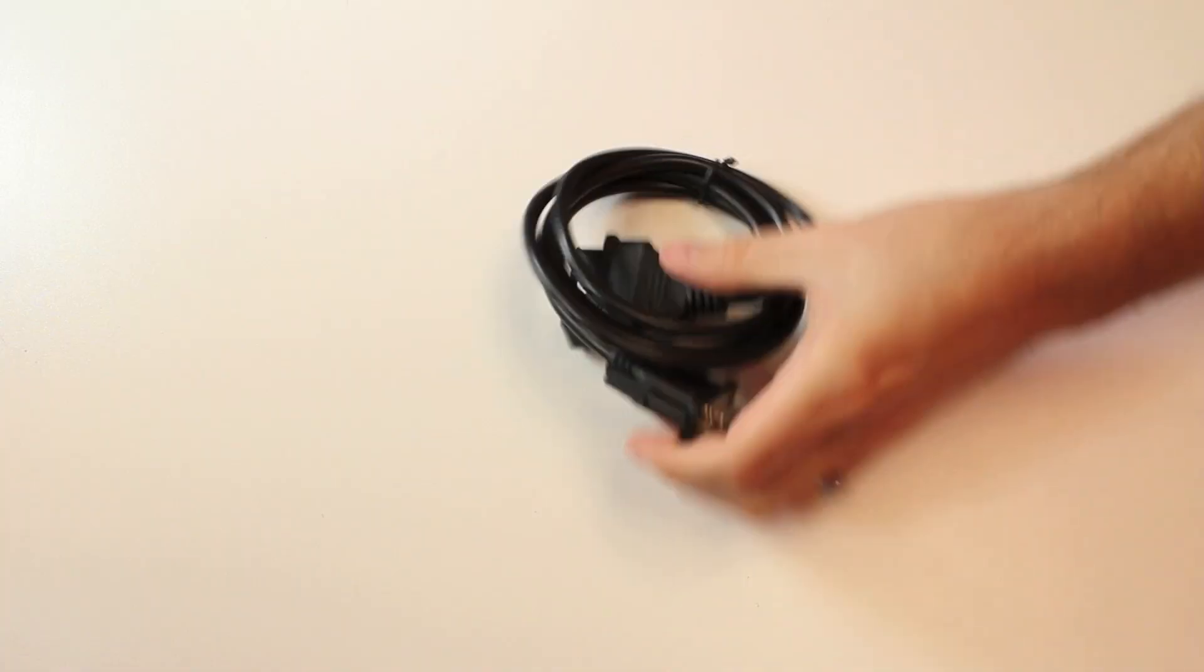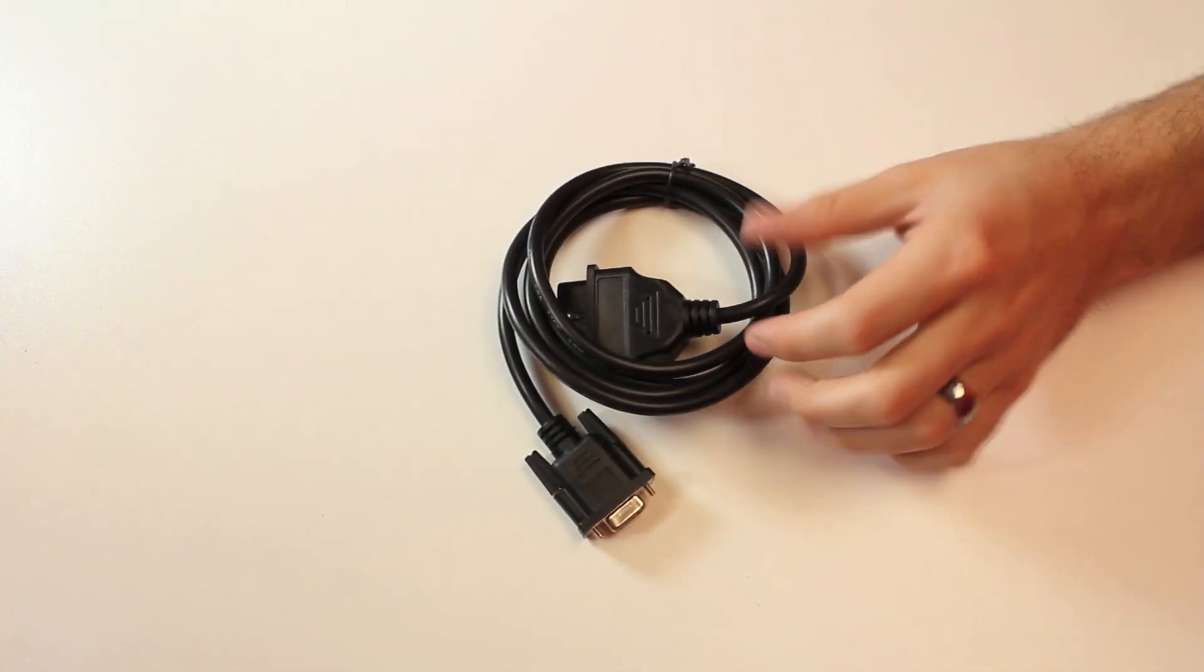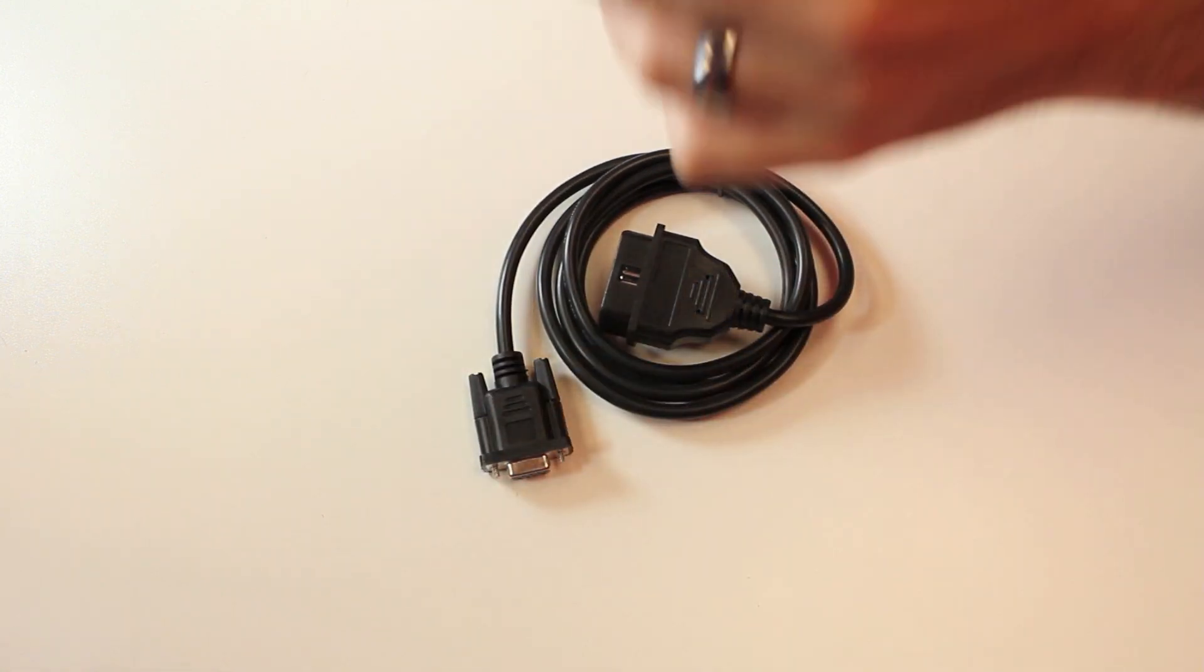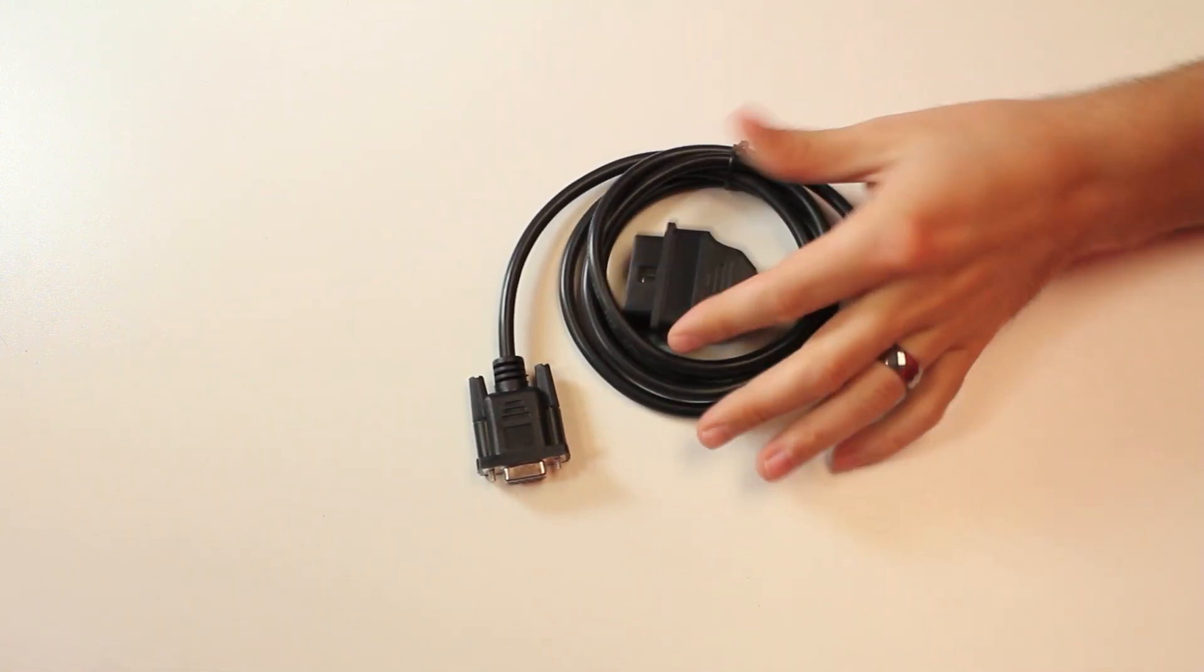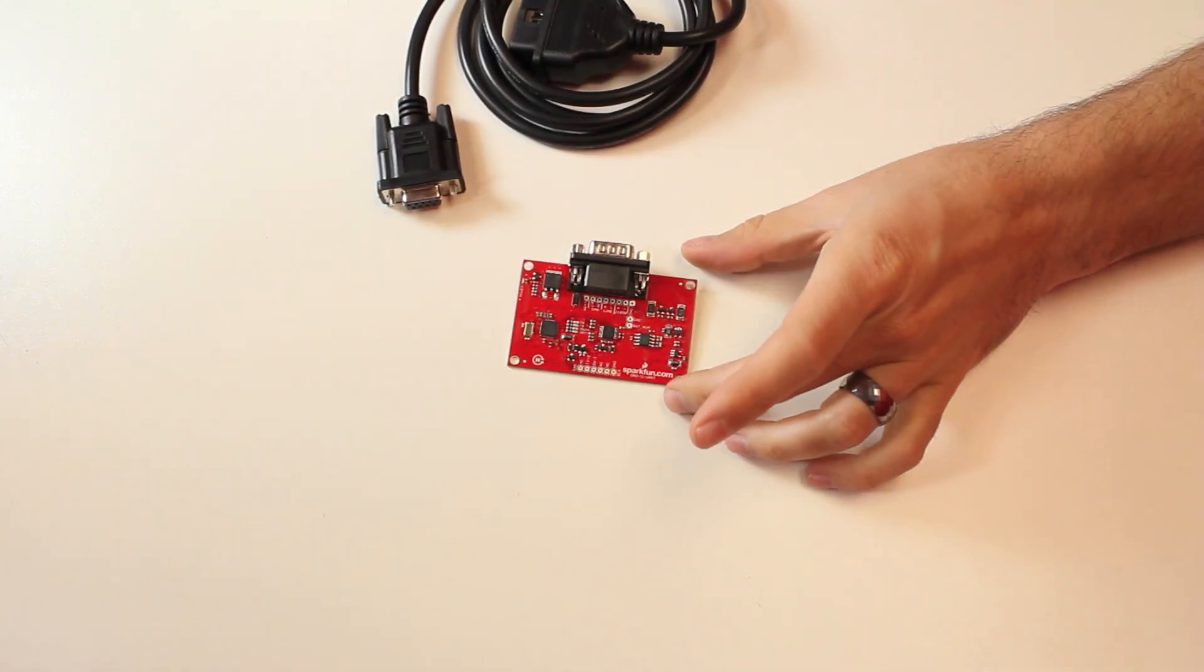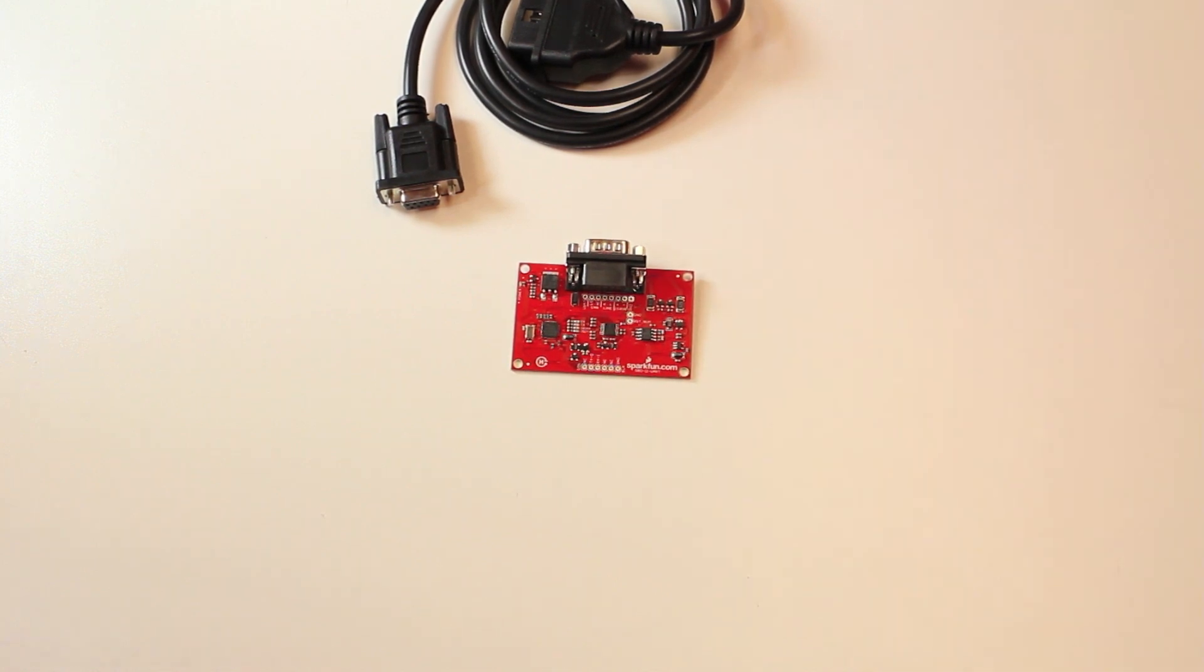First up we've got this OBD2 connector cable and it is an OBD2 on one end and a DB9 on the other. So you plug this into your car's OBD port and then the other end goes into the Car Diagnostic Board, and what this does is essentially allow you to take in the information that your car is spitting out, translate it, and then do things based on that.